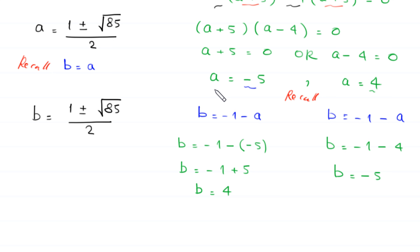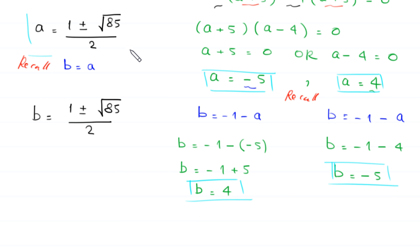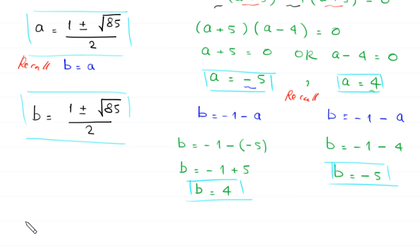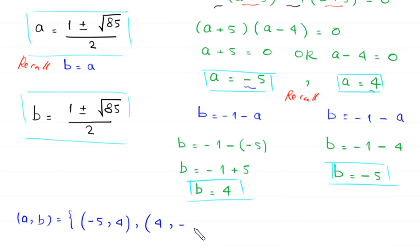So the final set of solutions for (a, b) are: the first pair is (negative 5, 4), the second pair is (4, negative 5), and the third pair is ((1 plus root 85)/2, (1 plus root 85)/2), and the fourth pair corresponds to the minus case: ((1 minus root 85)/2, (1 minus root 85)/2).